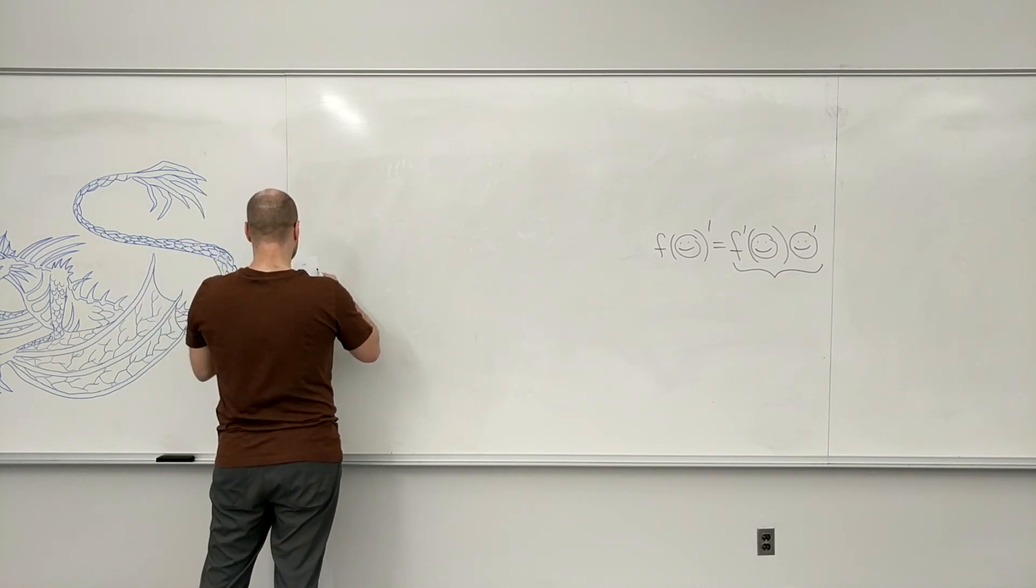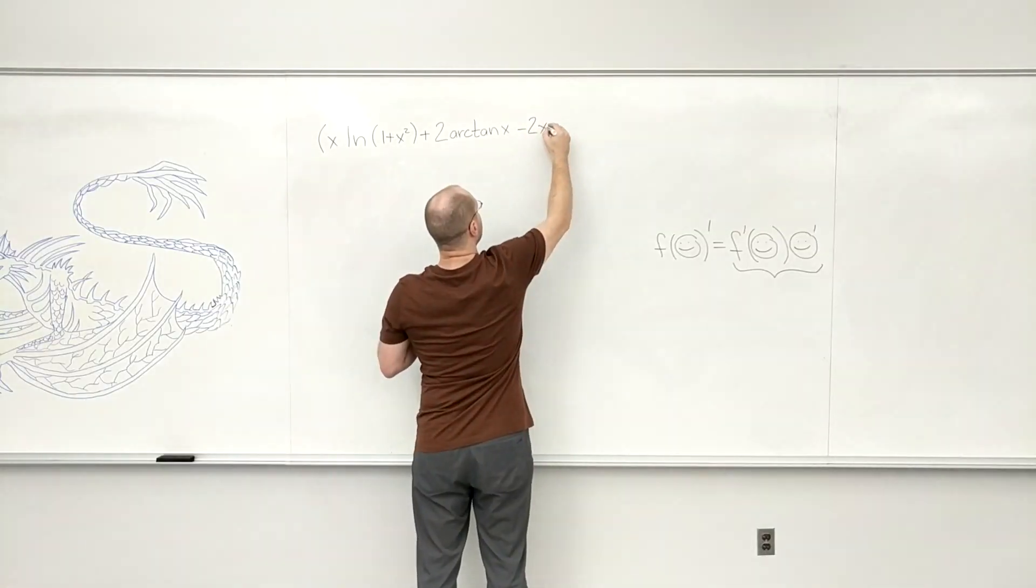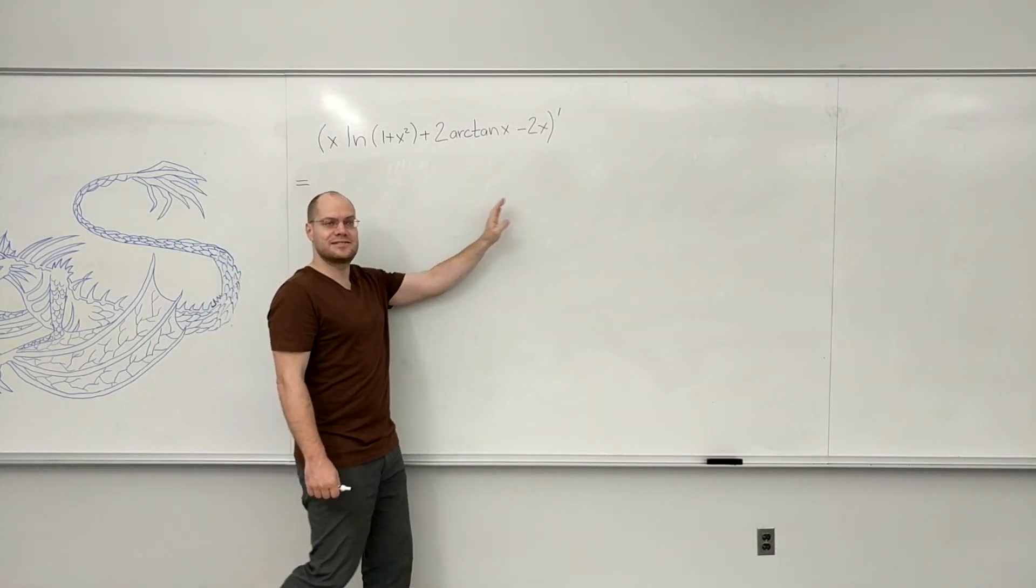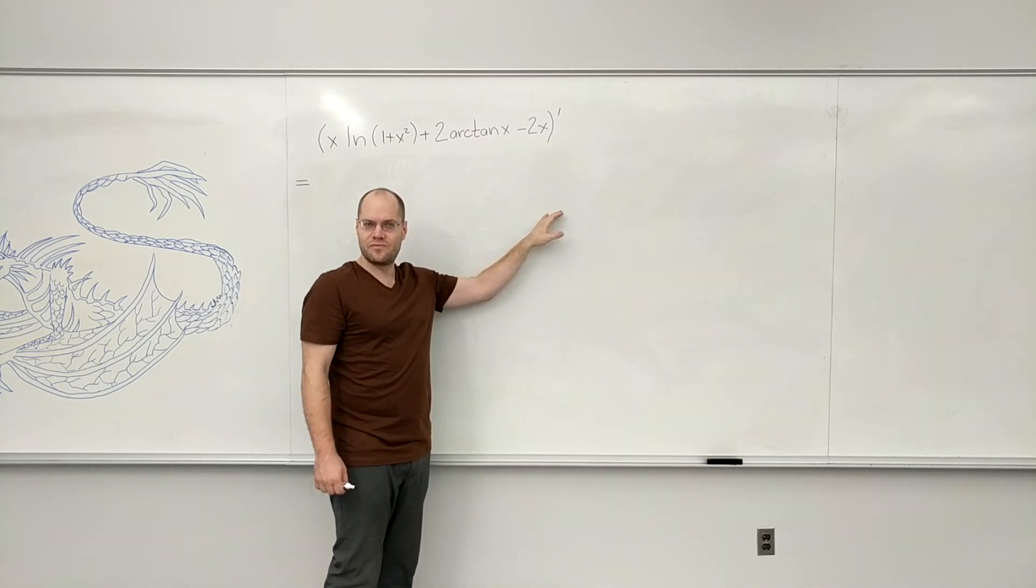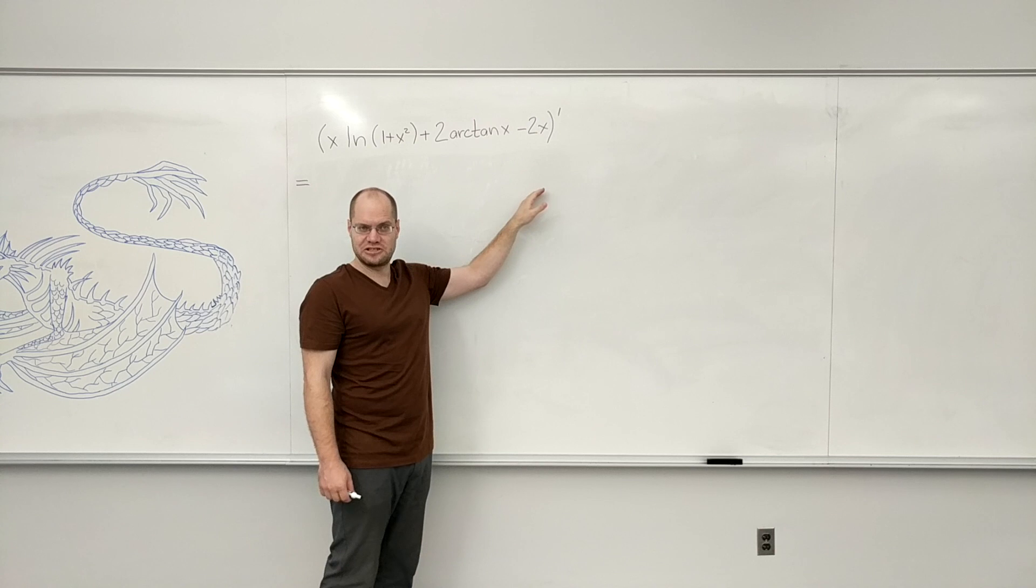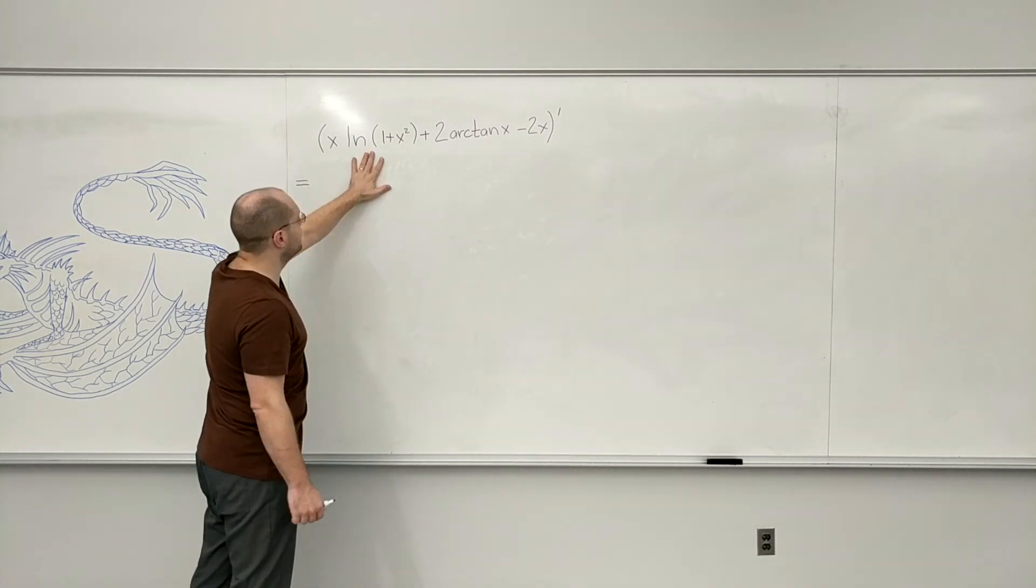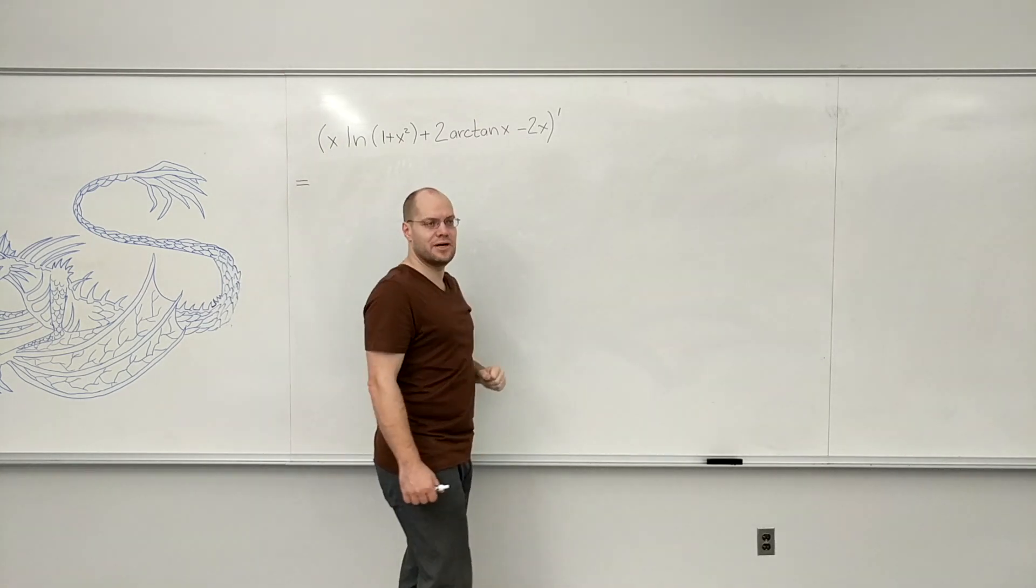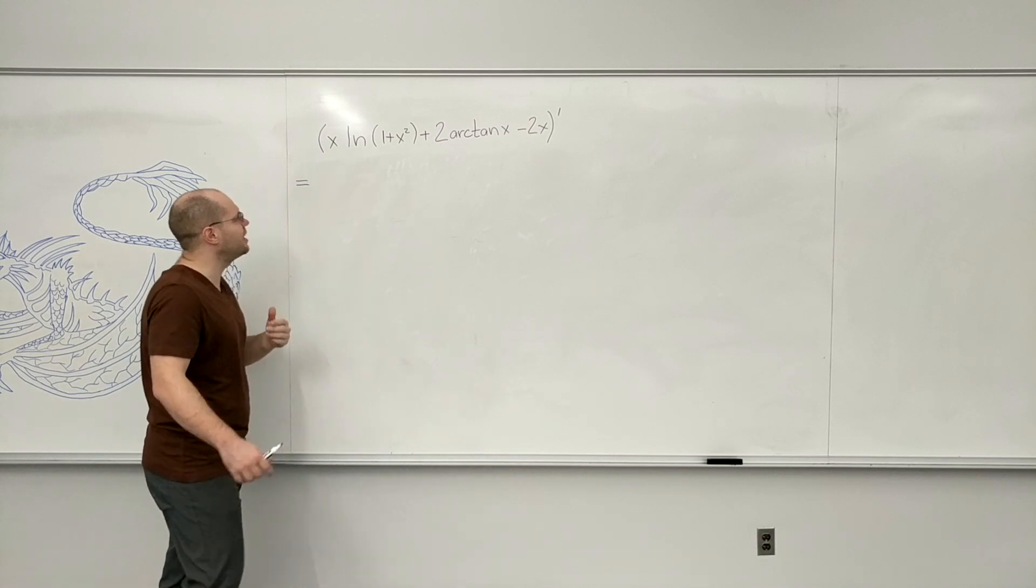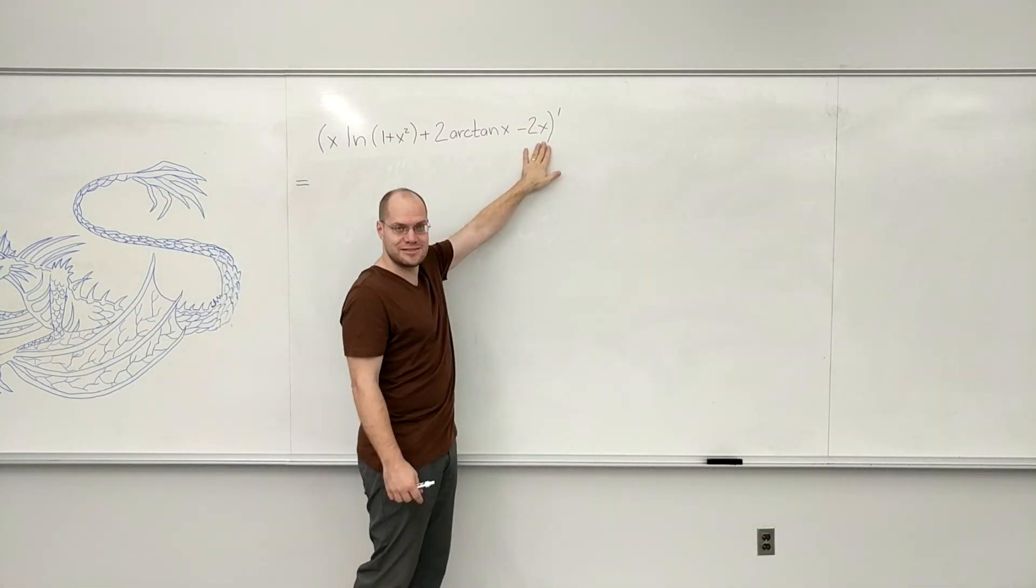So this was one of the challenge problems. Let's do this one because it has a little bit of everything. But first tell me what the outermost feature of this expression is. It's a sum of three things—this, this, and minus 2x. You never have to say difference; difference is also sum with a minus sign. So when you have a sum it's easy, you just do it in three parts.